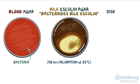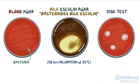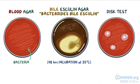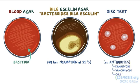Finally, a disc test can be done, which identifies Bacteroides fragilis by its resistance to antibiotics like kanamycin, vancomycin, and colistin.